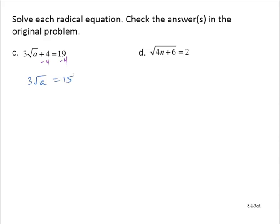This yields the square root of a equals 5. The radical is isolated, so now I will square both sides, yielding a equals 25.